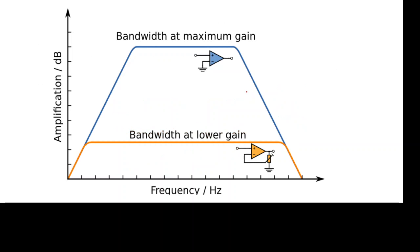Moving to the next slide — at lower gain levels the bandwidth is larger, and at higher gain levels the bandwidth is smaller. So there is an inverse relationship: smaller gain gives larger bandwidth, and larger gain gives smaller bandwidth.